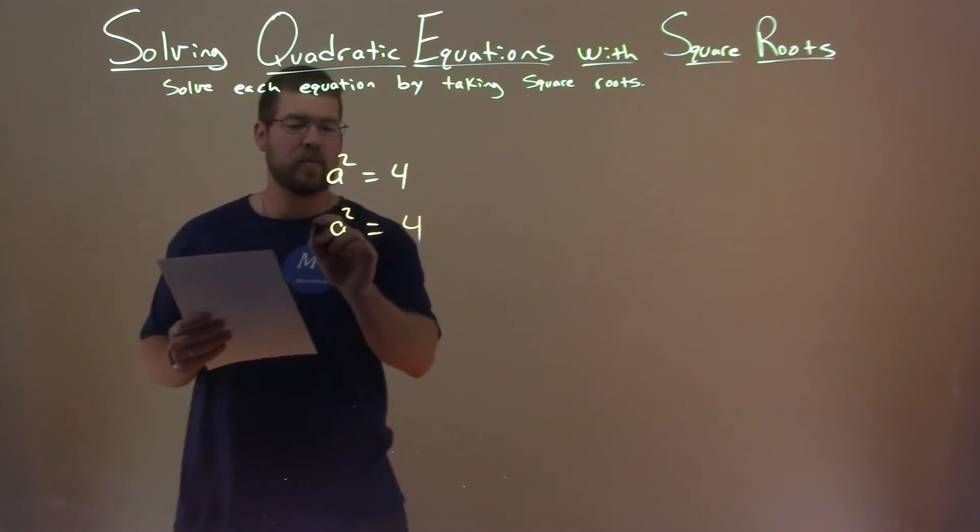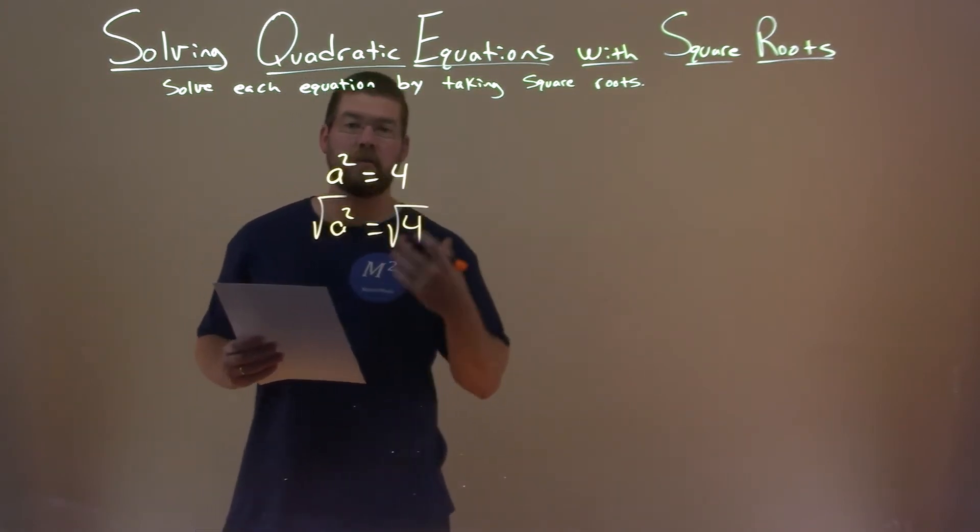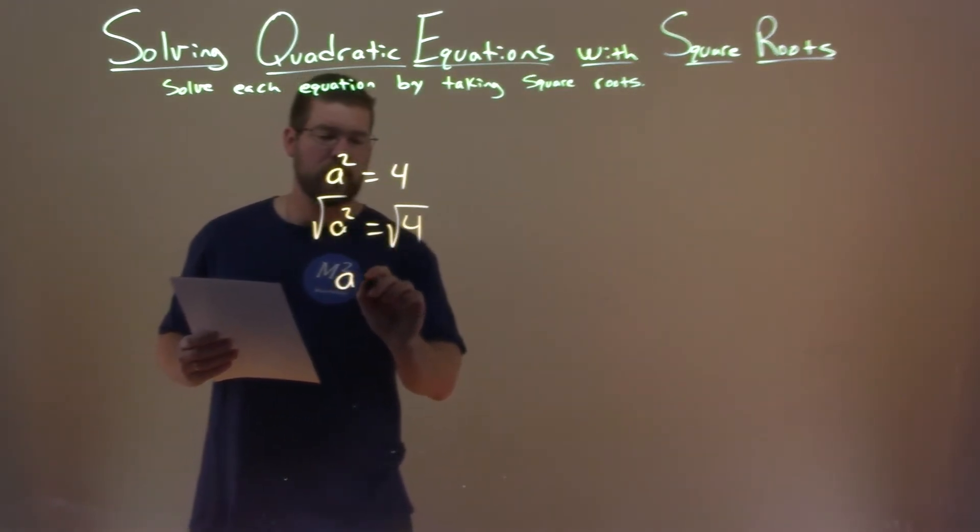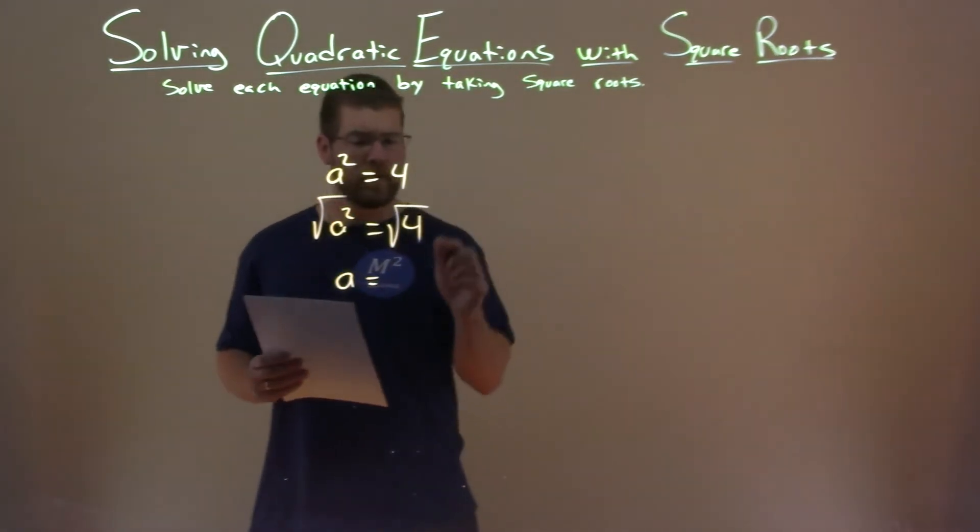So to eliminate that square, I need to take the square root of both sides of the equation. That eliminates the squared value for the a, so a is now by itself, and the square root of 4 is 2.